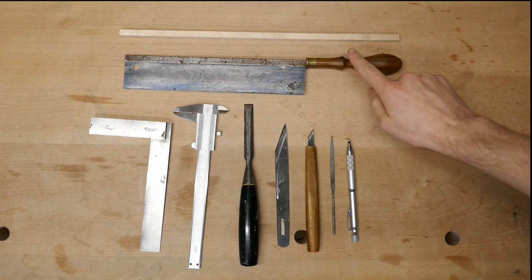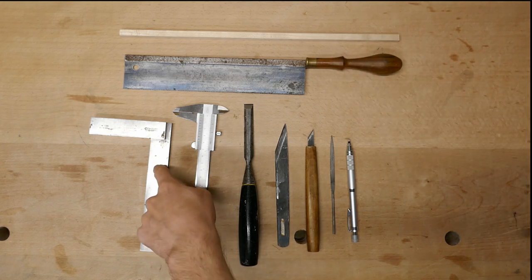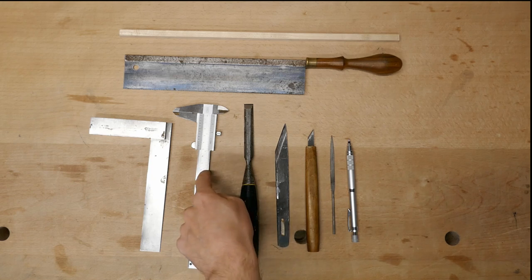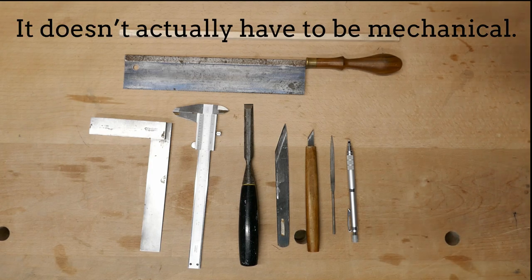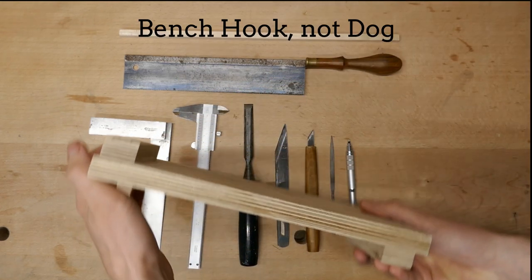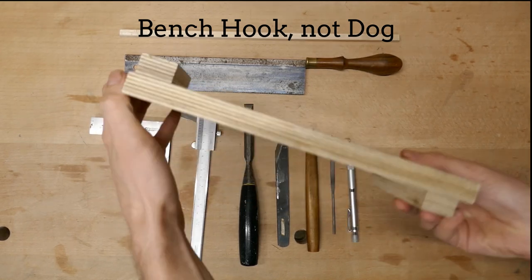You'll need a fine saw for making cuts in the wood, something for making right angles, something for measuring and marking, a few chisels, a few knives, a few small files, and a mechanical pencil. It's also very useful to have one of these bench dogs for sawing against.